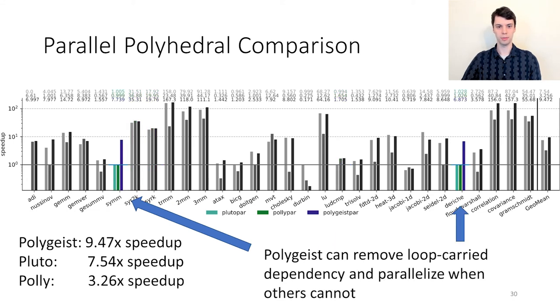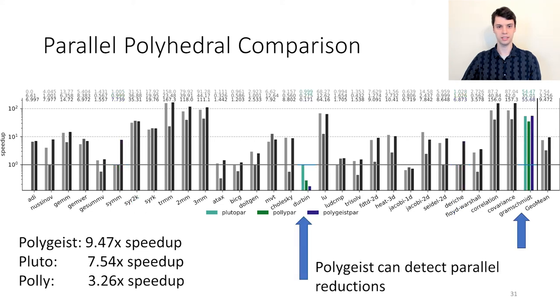Polygeist is the only framework that can parallelize Deriche and SIM by analyzing and removing the loop carry dependency. The two tests get a 7 to 8x speedup as a result. Finally, Polygeist identifies a parallel reduction within Gramschmidt and Durbin. On the Gramschmidt test, this yields a small advantage, whereas the Durbin test sees a 6x slowdown as the loop has few iterations.